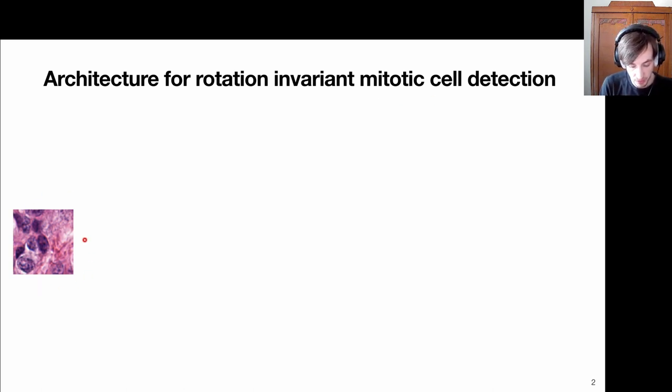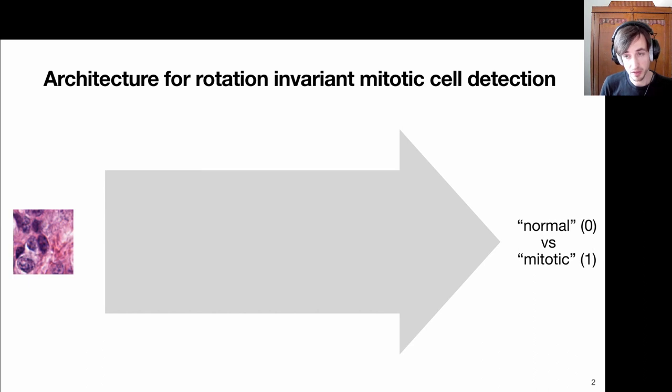Given an input patch, we pull it through a neural network and it should spit out the label: it's a normal cell or it's a mitotic cell.